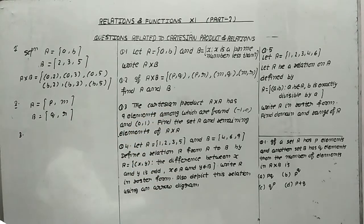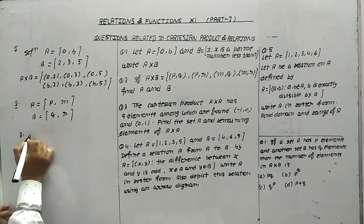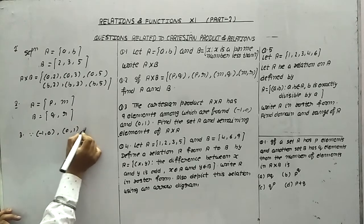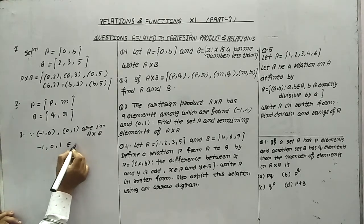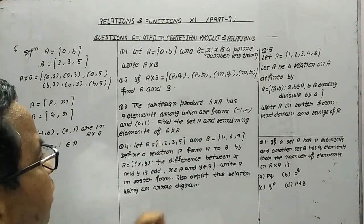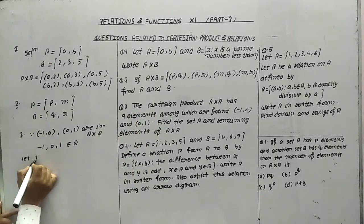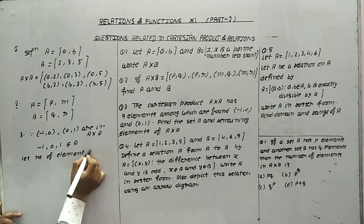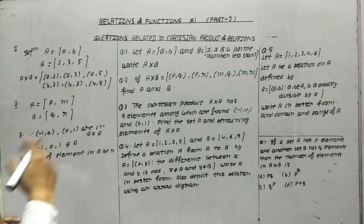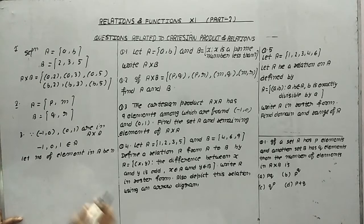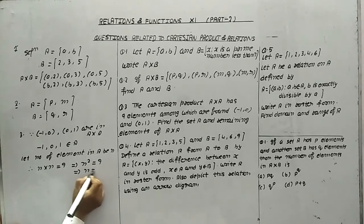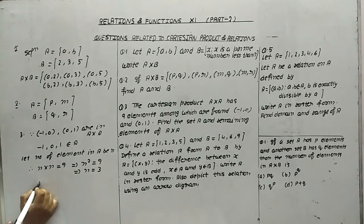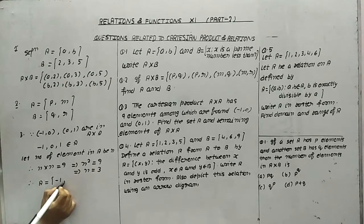Now question number three — a very important question. The Cartesian product A cross A has nine elements, among which are found (-1, 0) and (0, 1). Because (-1,0) and (0,1) are in A cross A, it means -1, 0, and 1 belong to A. Let the number of elements in A be N. The number of elements in A cross A is N×N = 9, which implies N² = 9, so N = 3. The set A equals {-1, 0, 1}.